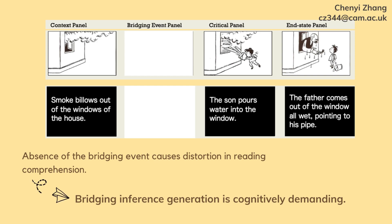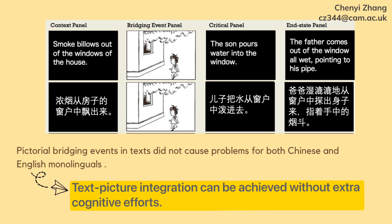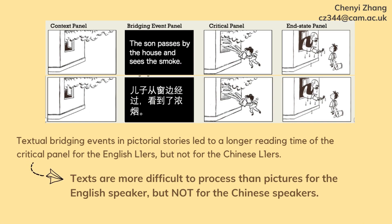Taking these results together, we may come to an interim discussion. For speakers of both languages, the absence of the bridging event causes distortion in reading comprehension, in line with previous studies suggesting bridging inference generation is cognitively demanding. Second, the pictorial bridging events in text stories did not cause problems for both groups, indicating text-picture integration can be achieved during reading comprehension without extra effort. The textual bridging events in pictorial stories, however, had different effects: English speakers needed more time to comprehend such stories, while Chinese speakers didn't. A major difference between the two languages lies in the scripts — Chinese uses a logographic script, which could be more straightforward to process and in some way picture-like. Therefore, the processing difficulties were only caused by the alphabetic English scripts.